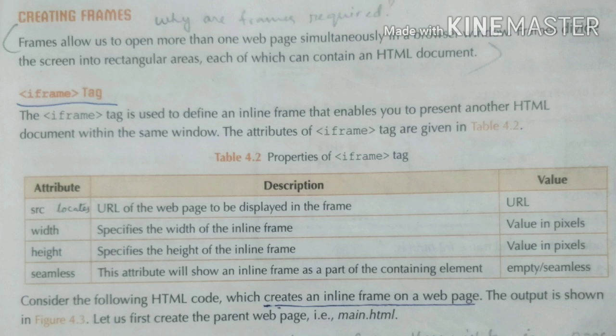The attributes of iframe tags are given in table 4.2. Some attributes are given which will help you use this tag more properly. You can decide how much width, how much height, and whether you want to give a border. The src attribute is one of the important attributes of this tag — it will locate the URL of the page to be displayed in the frame. What file will appear in the frame is decided by src. How much width and height it will have is decided by the height and width attributes.